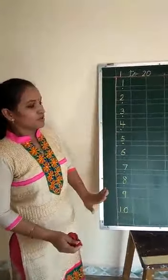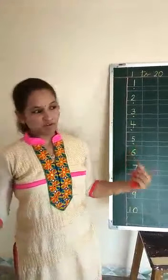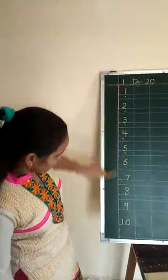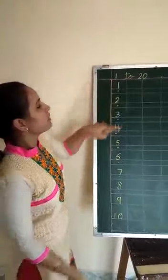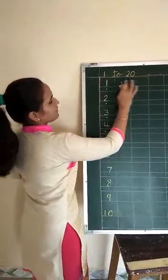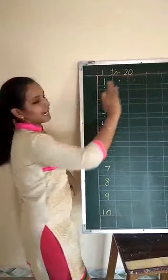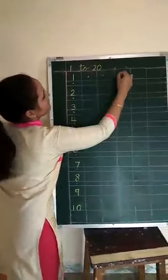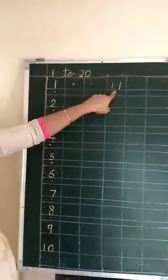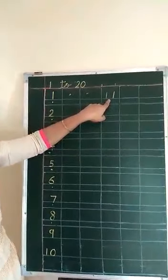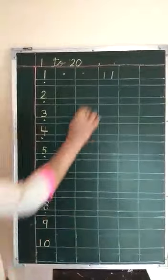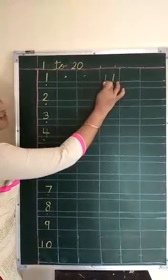So after 1 to 10, we have to write 11 to 20. Whenever we finish writing 1 to 10, we have to again put a double dot — means 2 dots. Then after, we have to write 11. See, write 11 in 1 box only. Don't write in 2 boxes because you are now in Senior KG. So I have written 11.